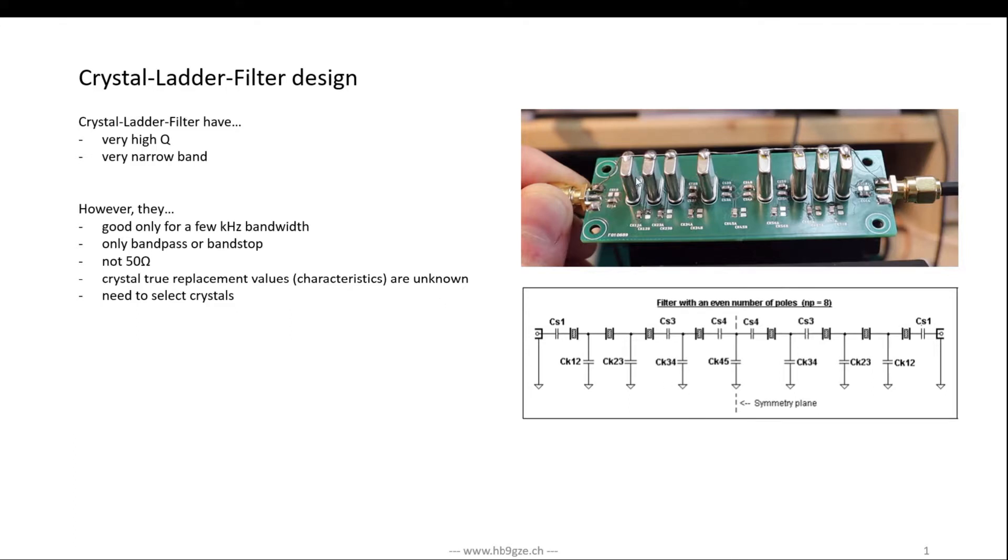They're good for band stop and band pass filters. They don't have a 50 ohm impedance at the input and output, so you always have to impedance match depending on your amplifier and next stage impedances. If you don't match these filters, you get a higher ripple in the passband, so it's really recommended to match these filters.